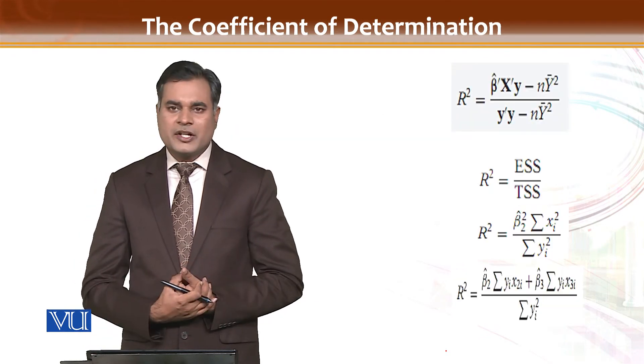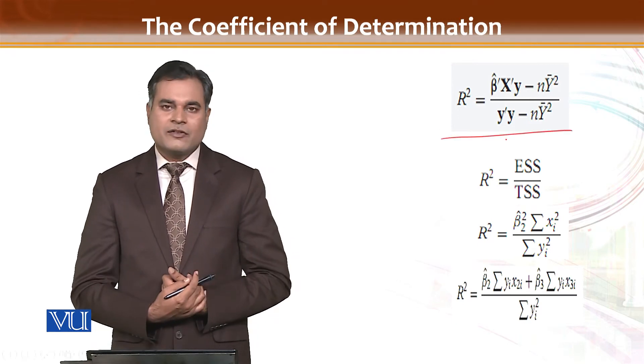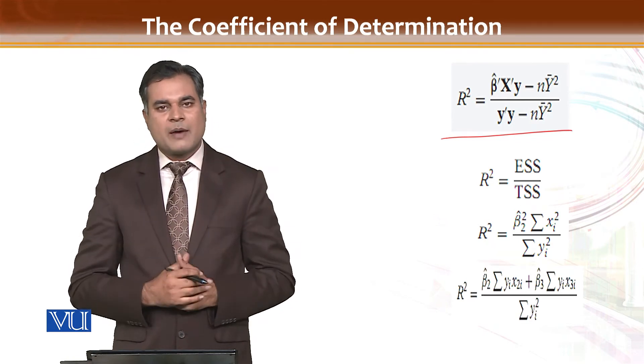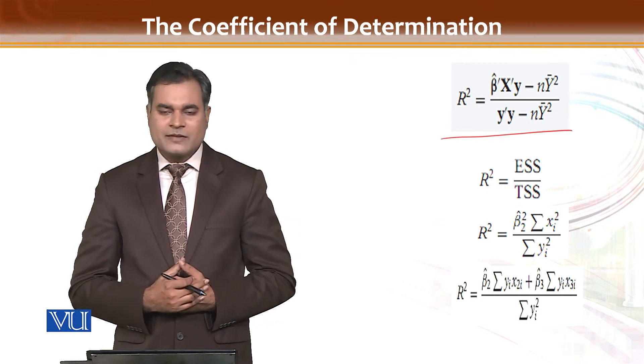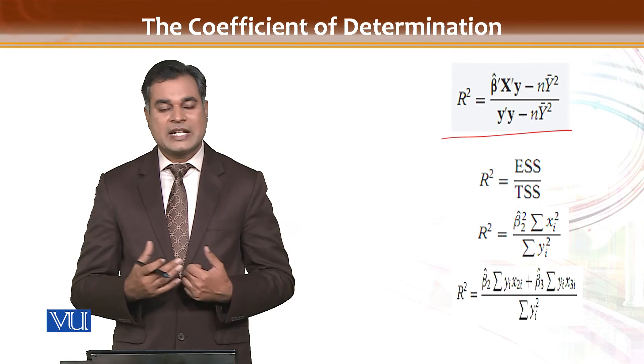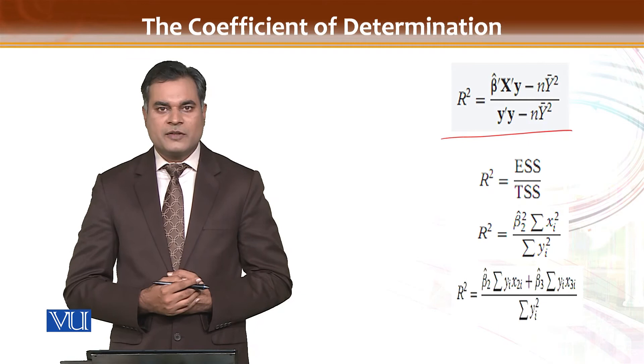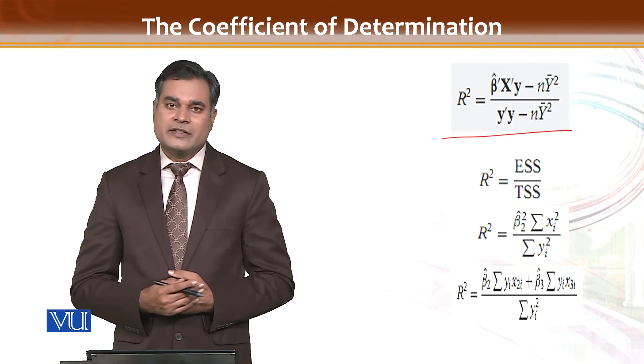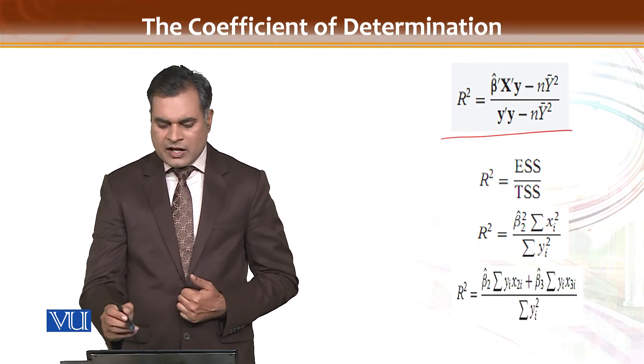Now how do we estimate this? How will we practically use it by using matrices approach? The formula for R square is very simple: it is equal to beta vector transpose into X transpose into Y minus n into y bar square, divided by Y vector transpose into Y minus n into y bar square. Y bar is your mean value. You have already done all these things, if you have the information you can easily find it.